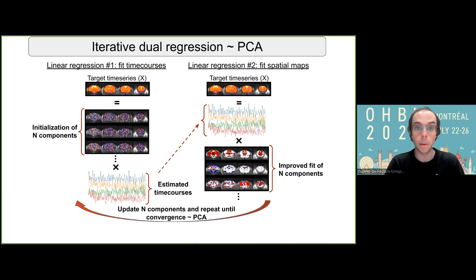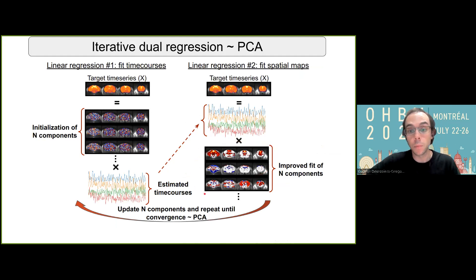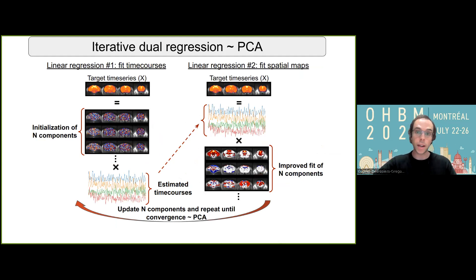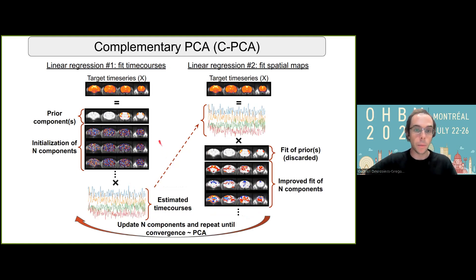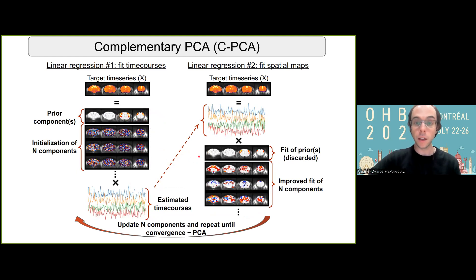This framework first builds on an important concept: by iterating dual regression while providing the component output from one iteration as the input for the next, this process will converge on a set of components that maximize variance explained in the scan time series. This is in fact equivalent to principal component analysis, or PCA, which is effective at finding the variety of sources present in a given scan. This particular formulation of PCA is important because it can easily be modified to introduce a prior at the beginning of each iteration, such that this prior is already accounted for in the regression, thus enforcing the other components to differ from this prior. I call this approach complementary PCA, or CPCA.